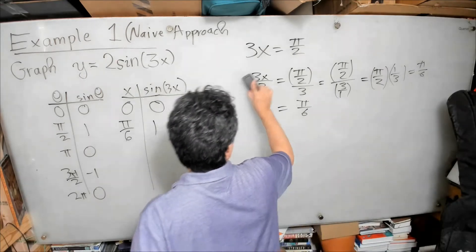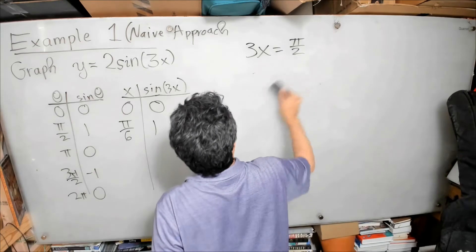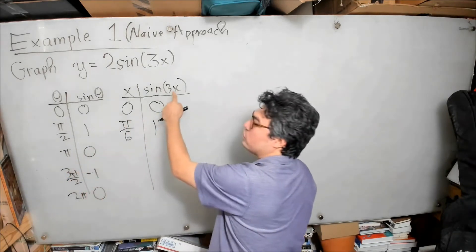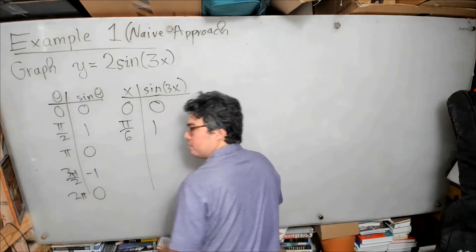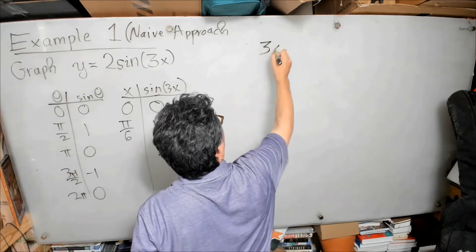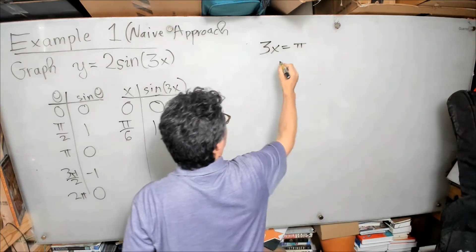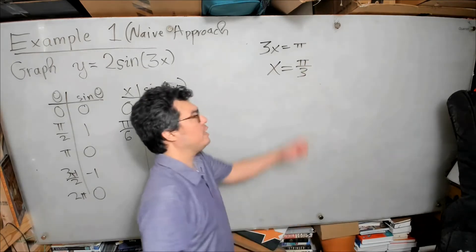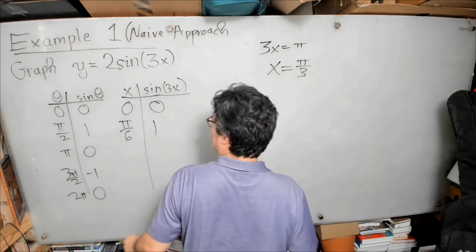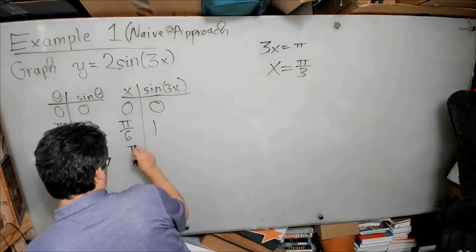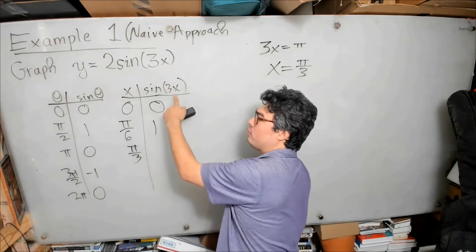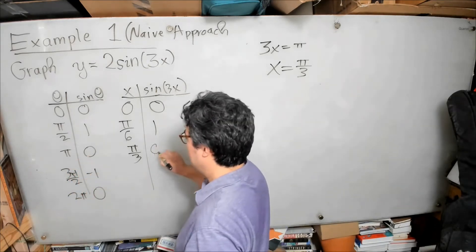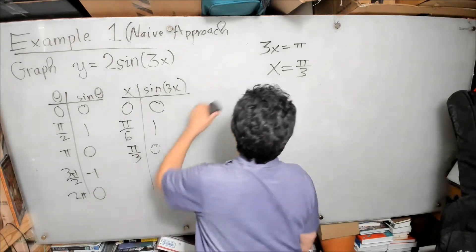The next question: what does x have to be so that 3x equals π? Setting 3x = π and dividing both sides by 3, x = π/3. So at x = π/3, the value 3x is π, and sine of 3x equals sine of π, which is 0.